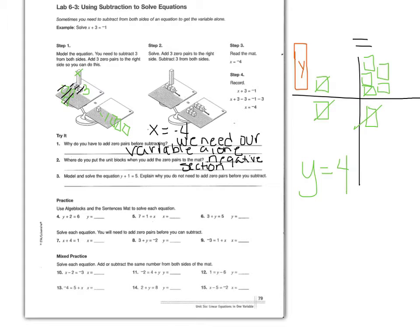Let's do some practice. Use your sentence mat and your blocks to complete problems four, six, eight, ten, twelve, and fourteen. Please take pictures of each of your mats with the blocks on them and your solution, and place them in here when finished. I hope this helps you — you can always ask to use the algebra blocks while working on this unit. If you have any questions, please don't hesitate to ask myself or Mrs. Bino. Bye for now.